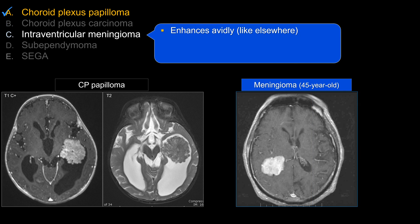Another choice is choice C, intraventricular meningioma. It should look like meningioma elsewhere — homogeneous, avid enhancement, and sometimes it can calcify. This is an adult disease; it's relatively uncommon to see intraventricular meningioma in kids. Because it does not have CSF overproduction capability and tends not to have leptomeningeal metastasis, you don't expect to see hydrocephalus unless it's in a location that can cause obstruction.